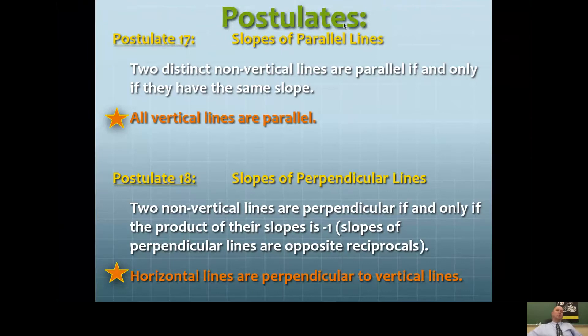This will be the third video on section 3.4 slope. We're going to look at two postulates. Postulate number 17 talks about the slope of parallel lines. It tells you that two distinct, that means different, non-vertical lines are parallel if and only if they have the same slope.